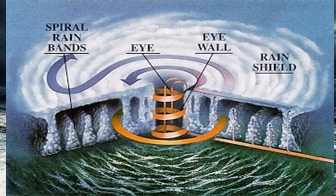When you look at the outer ring of the eye, it's known as the eye wall. This is the border between the rest of the storm and the eye. And then the rest of this hurricane is known as the rain shield, and this is where all the rain and wind is stored in the storm.